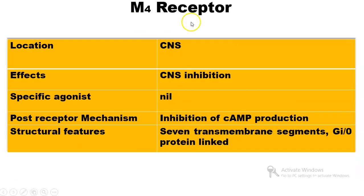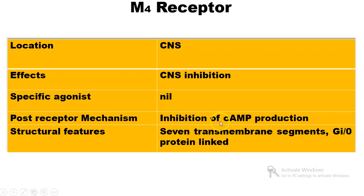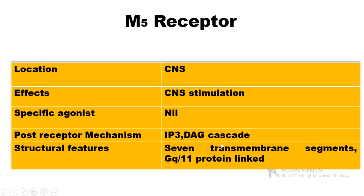Next are M4 receptors, located in the CNS. The effects of M4 receptors are CNS inhibition, and the specific agonists of M4 receptors have not yet been found. The post-receptor mechanism involves inhibition of cyclic AMP production. The structural features include 7 transmembrane segments and a Gi protein link.